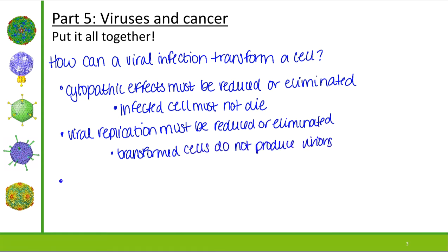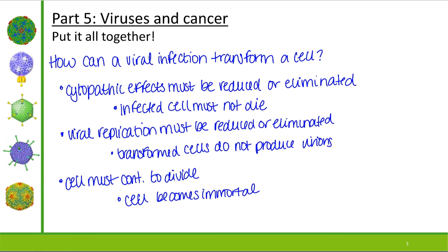The third characteristic is that the cell must continue to divide — in a sense, the cell becomes immortal. So an infected cell that doesn't die, doesn't produce virions, and continues to divide means the viral genome keeps being copied along with the cell. This should remind you of a persistent infection from topic 16. Transformation of cells is very much like a persistent infection.